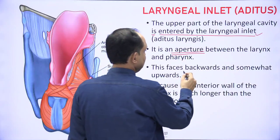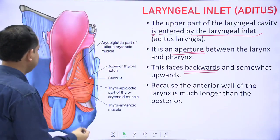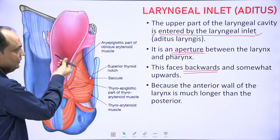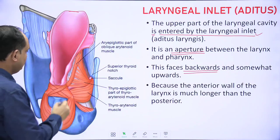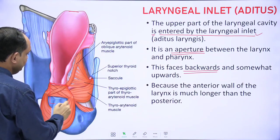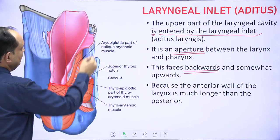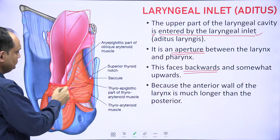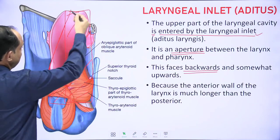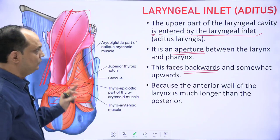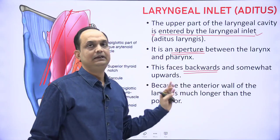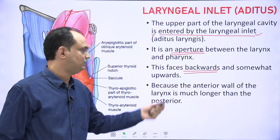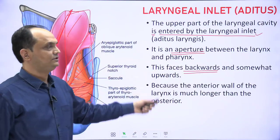The laryngeal inlet faces backward and somewhat upward. In the diagram you can see the inlet facing backward and upward. This is because the anterior wall of the larynx is longer and the posterior wall is shorter, giving the inlet a slope. Because of this slope it has a direction that is backward and upward.